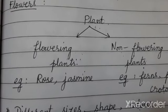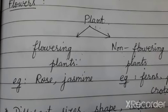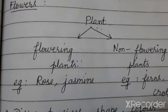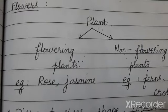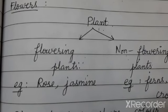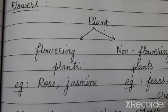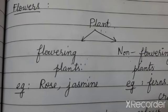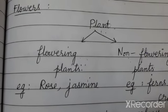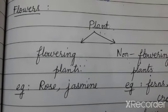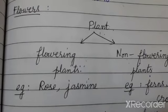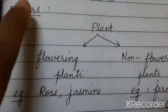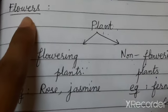Good morning children. Today we are going to see biology, getting to know plants chapter. We already discussed about the parts of the plant like stem, roots, and leaves. Today we are going to discuss about the next part of a plant — that is flowers.